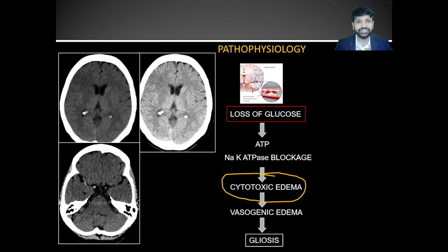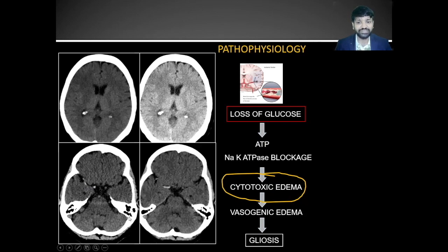On thin sections, try to trace the artery that supplies the abnormal area, because vascular structures on thick sections may show hyperdensity due to the partial voluming effect. But when looking at thin sections, if continuous sections are showing hyperdensity in the vessel, that is definitely abnormal.